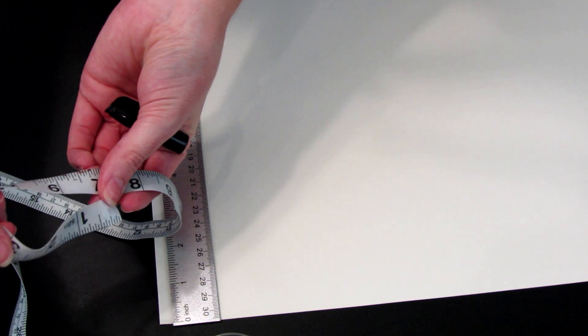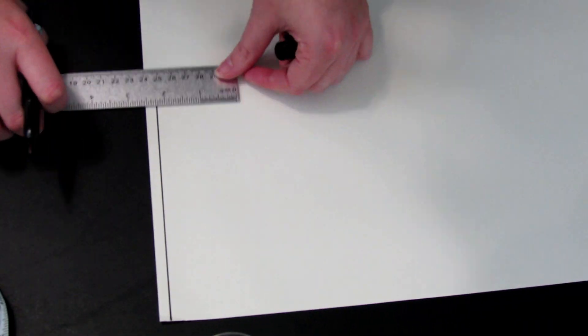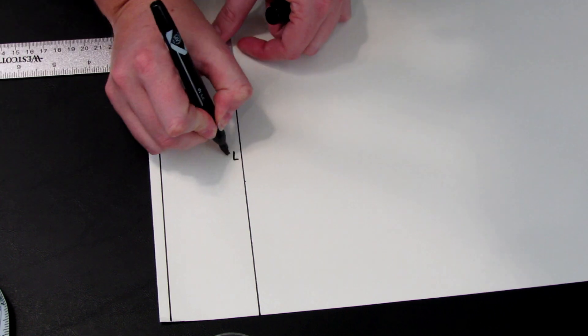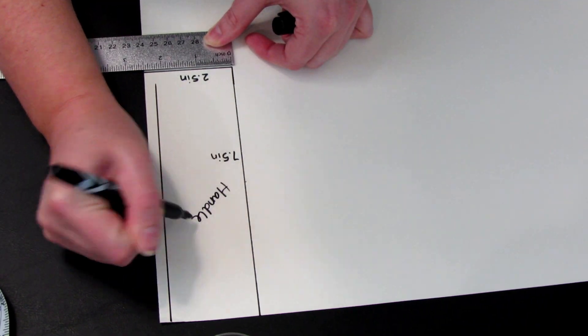For the bag handle I just used the tape measure to see what felt right in my hand and then I drew the pattern so that it could be folded and sewn. I decided on 7.5 by 2.5 inches.